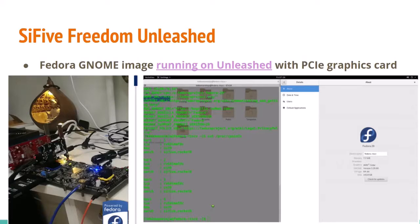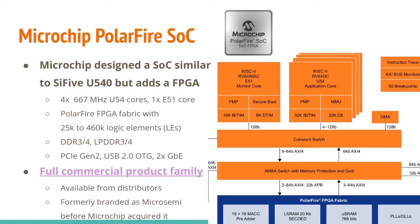If you have the necessary hardware — though it's rare and expensive — you can boot the Fedora GNOME image on the Unleashed board with an expansion board and graphics card, giving you a full Linux graphical desktop on RISC-V. The key takeaway is that we now know it works, and as hardware becomes more available, this kind of functionality will be accessible.